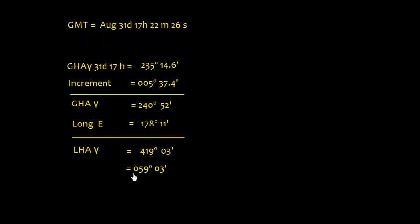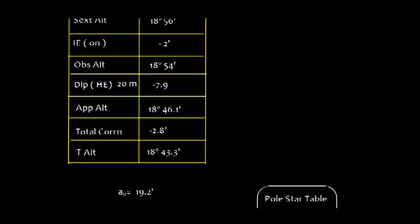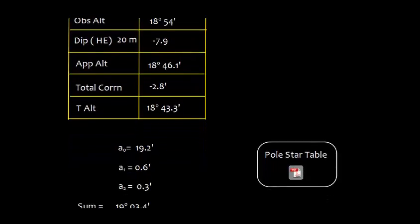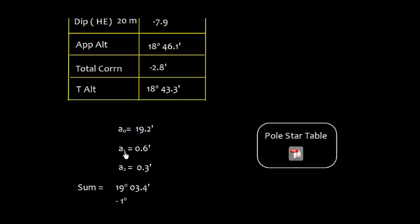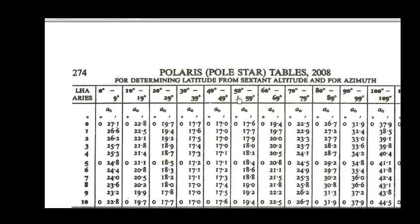Now look at this problem again. We have computed LHA Aries, which is 059° 03'. And we know that this is the true altitude. So we need to find all these a0, a1, and a2. For this, we need to enter again with this 059° 03'. Well, 059° 03', if we enter here.